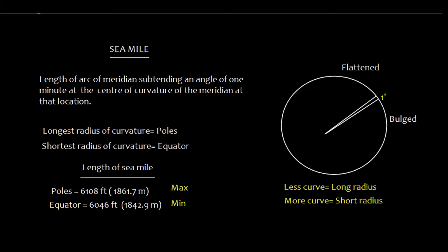Basically, C-Mile is the length of the arc of the meridian subtending an angle of one minute at the center of the curvature of the meridian.